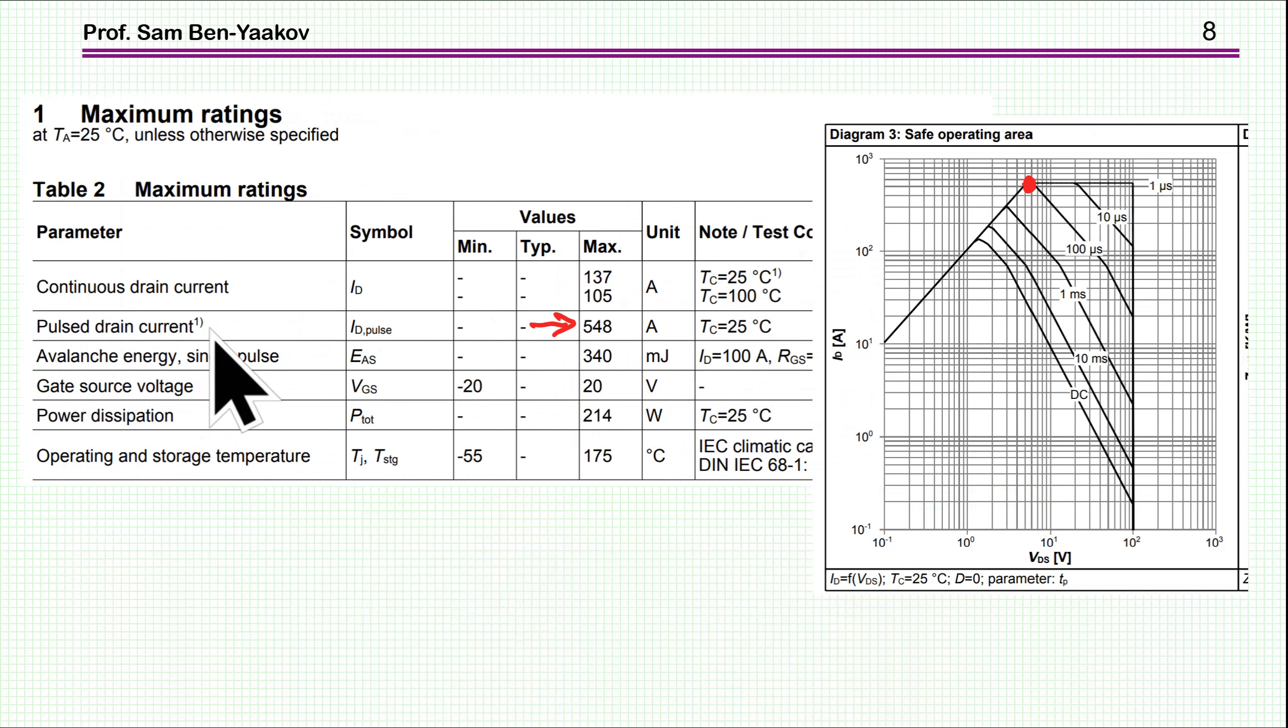Moving to pulse drain current, this is an instantaneous current for a short time. It's referring to diagram 3. 548 is for pulses shorter than 100 microseconds. If the pulse is 100 microseconds or shorter, the current could be 548. But if the pulse is 1 millisecond, the maximum current is lower, and at 10 milliseconds it's even lower.